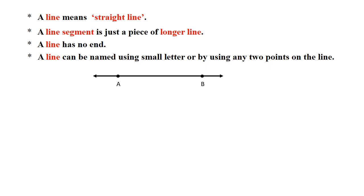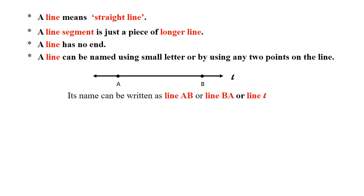Consider this line. Its name can be written as line AB, or line BA, or line L. Note that a line contains an infinite number of points on it.